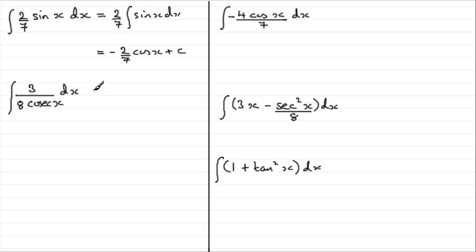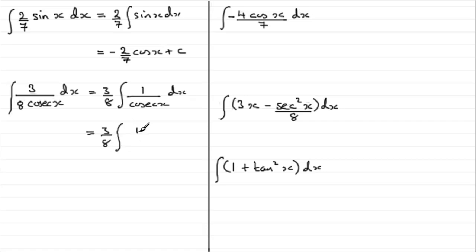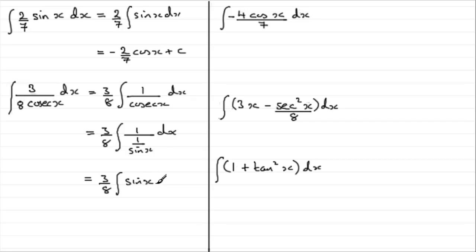For this one, pull out the 3 eighths out the front, and then we've got the integral of 1 over cosec x with respect to x. Cosec x is 1 over sin x, so integrating that with respect to x — we multiply top and bottom by sin x — and we end up with the integral of sin x with respect to x. We know that gives us minus cos x. So putting that with the 3 eighths, we end up with minus 3 eighths cos x plus the constant of integration.